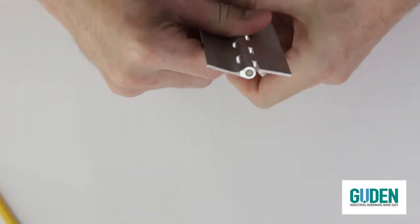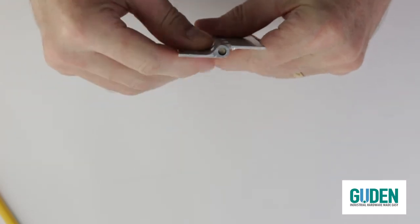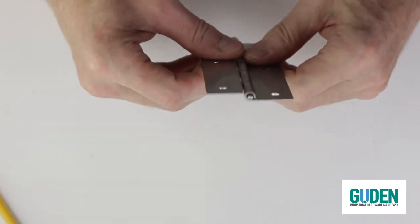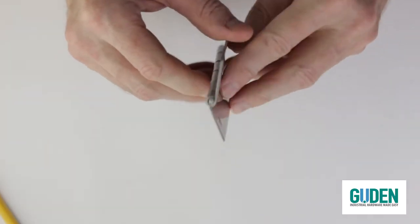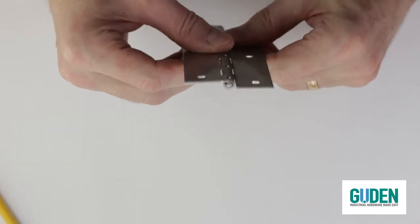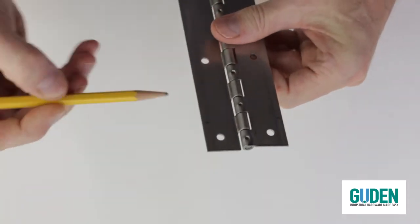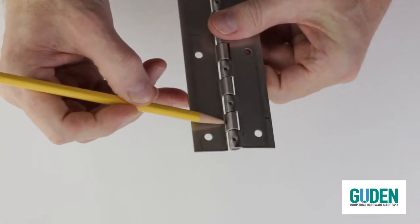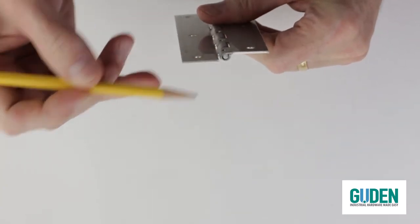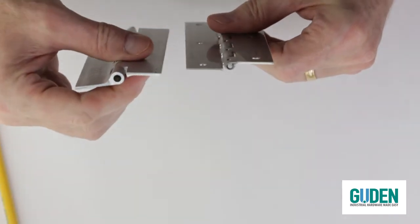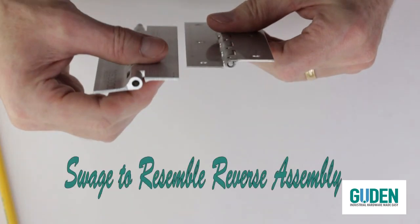That has the effect of changing the arrangement of the leaves. Because this is a very expensive operation in terms of all the labor involved, what's commonly done is doing a swedge to achieve the same result. Here we swedge this leaf so far down that it resembles the reversing operation. This is called swedge to resemble reverse assembly.